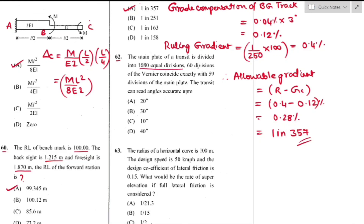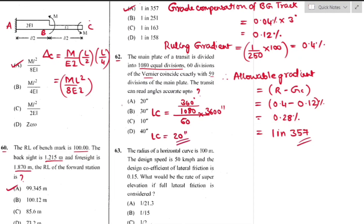Question number 62: A transit with main plate divided into 1080 equal divisions; 60 vernier divisions coincide with 59 main plate divisions. Least count = (360° / 1080) / 60 × 360 seconds = 20 seconds — option A is the right answer.